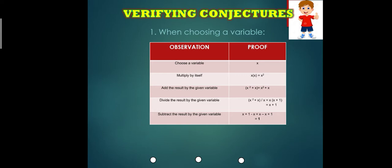X multiplied by itself, you will have X times X. The answer is X squared. Then the result X squared, you will add X. So the answer will be X squared plus X.